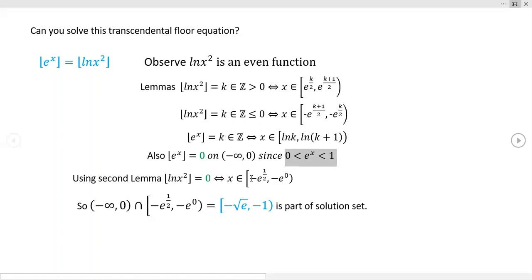Okay, we actually get that the floor of ln of x squared is equal to zero on this interval. All right, now notice that minus e to the one half is just the same as the square root of e. Okay, so we know for a fact that this is going to be part of our solution set. Now, we haven't proved that's the only part of the solution set.